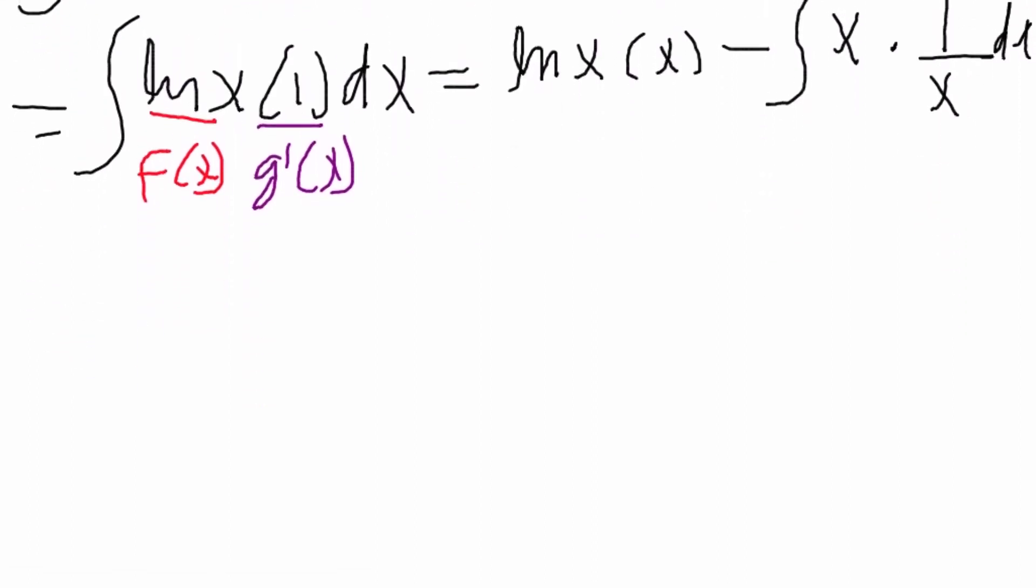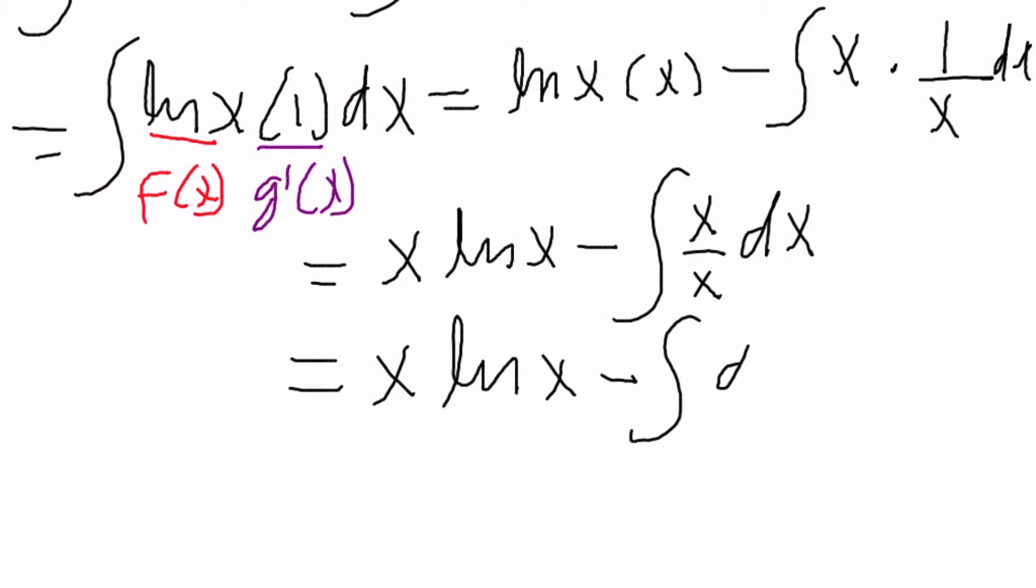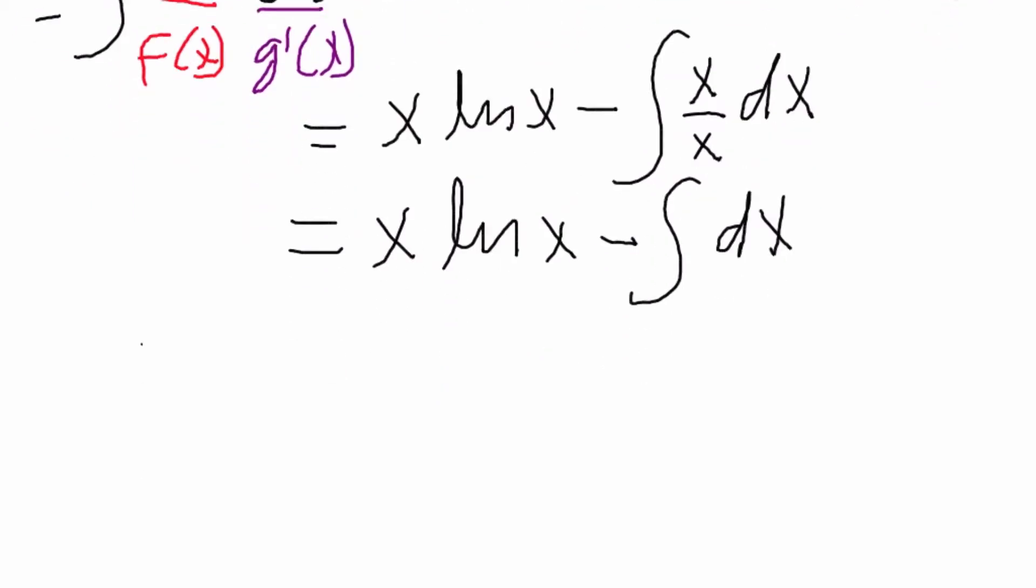We bring this down here a little bit and we rewrite it. Bring the x to the front: x ln of x minus the integral of x over x dx. When we integrate x that is just x.